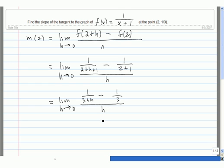We notice that if h equals 0, then the numerator becomes 1/3 - 1/3, which is 0, and the denominator is 0. So this is the 0/0 indeterminate form.